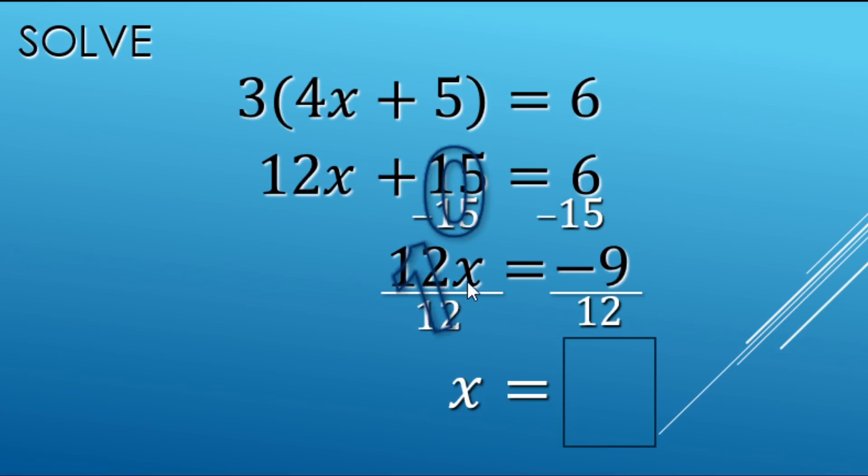So 12 over 12 is just one x, one x right there. And then negative nine over 12 is going to make a negative and then nine over 12 reduced, three over four is a value for the variable that makes the equation true.